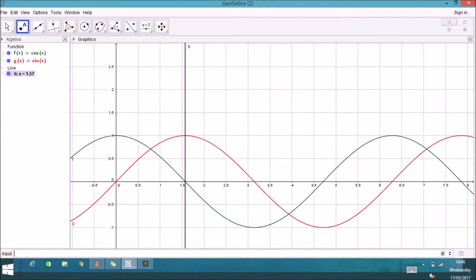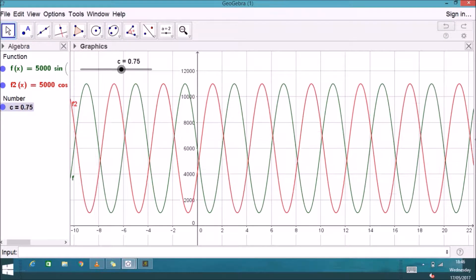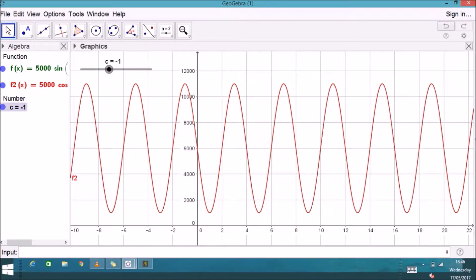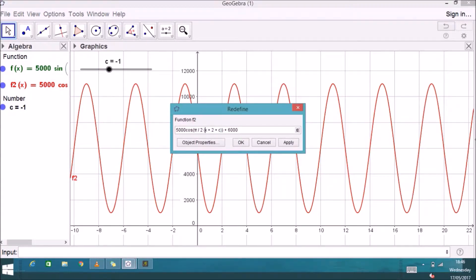So a quarter period is how much I'm going to have to shift this cosine function. Now the cosine function is actually ahead so I'll have to shift it backwards by a quarter of the period.